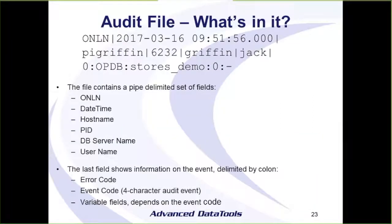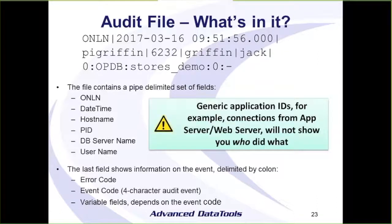Taking a look at this file — it's all pipe-delimited. The first set of fields begin with ONLN, followed by the date and time the event happened, the host name, the process ID, the database server name, and the username that triggered the event. The last field is colon-delimited: we start with an error code, the event, and then some fields that depend on the event being recorded. Something to remember is that the username tracked will be the user connected to the database — if you've got generic IDs for an app server, you will not know who actually made the change.